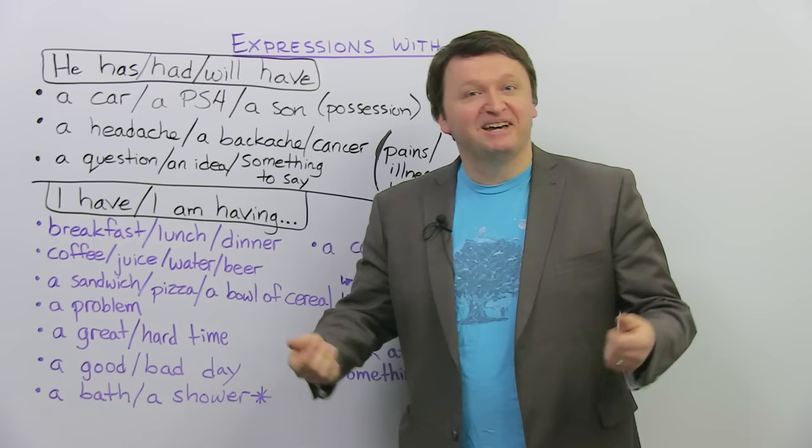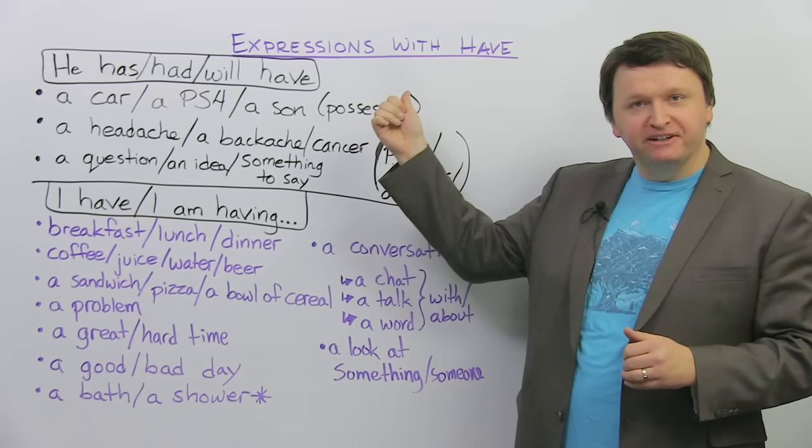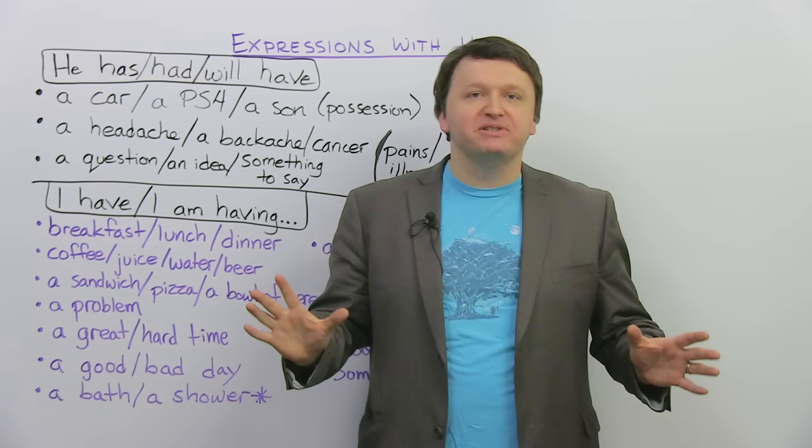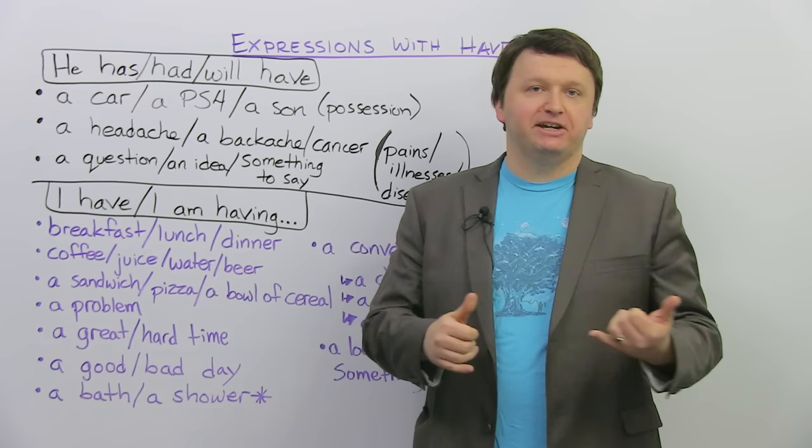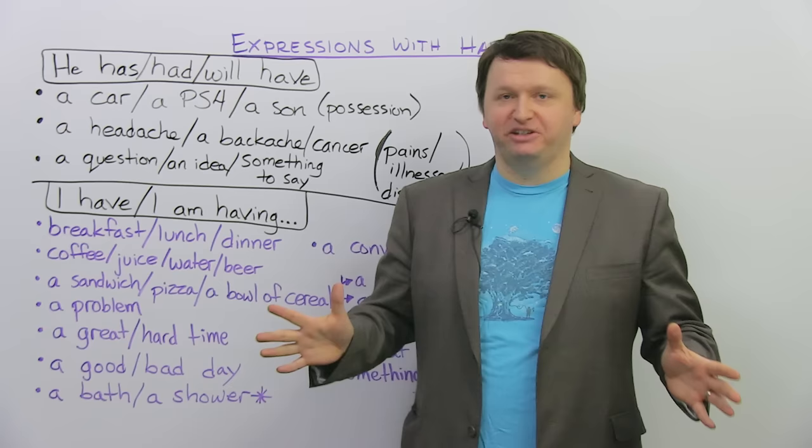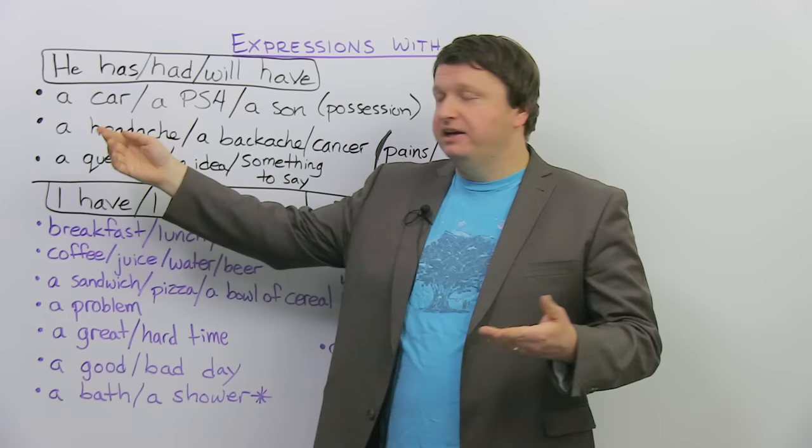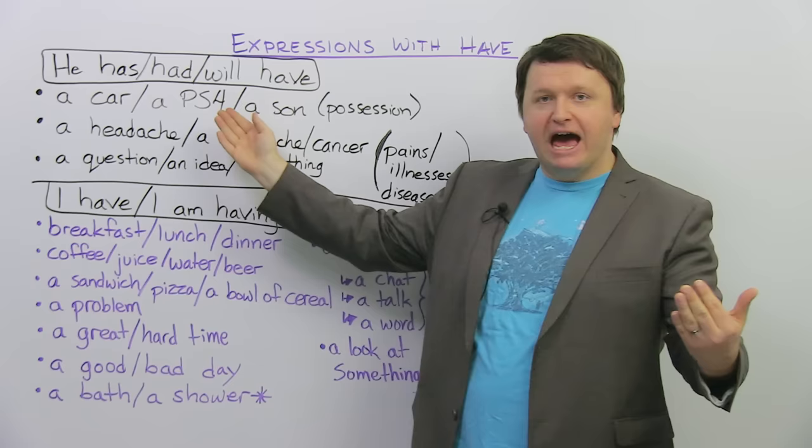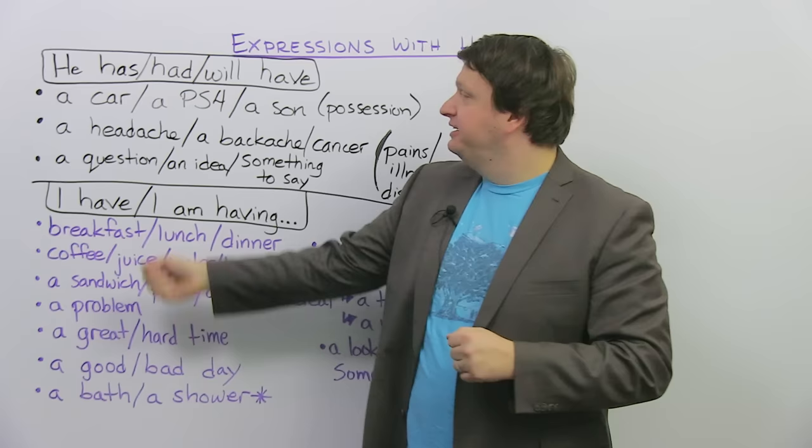Have is one of the most common verbs in the English language. And I know most of you know that you can use it for possession, but there are also a ton of other things and other expressions that we use with this verb. So today, I will look at some of these expressions. First, let's say, he has, he had, he will have. We have the present, the past, the future. I have, I will have, I had.